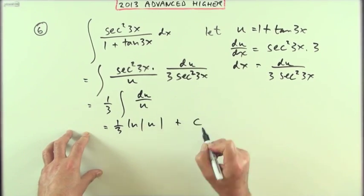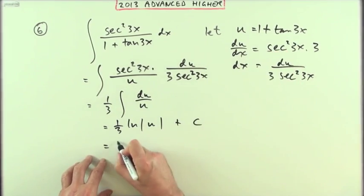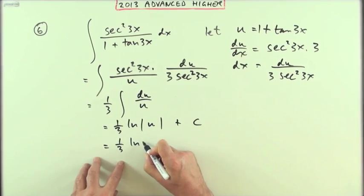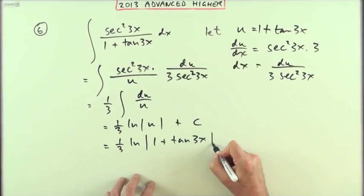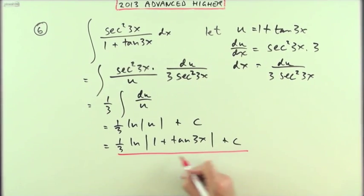Which is one third of ln of u plus c. Which putting the substitution back in gives you one third of ln of 1 plus tan 3x plus c. So you might have been happier doing that, thinking the greater amount of ink would justify those four marks.